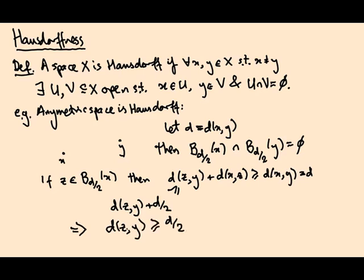So z cannot lie in the open ball of radius d over 2 around y. So these balls are disjoint. Any two points can be separated by balls in a metric space. That's to say, the metric space is Hausdorff.